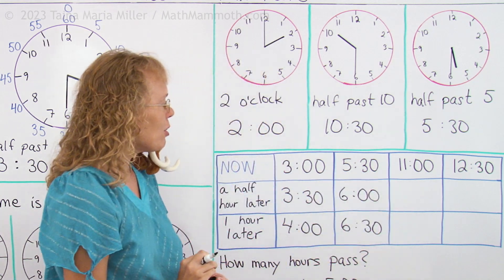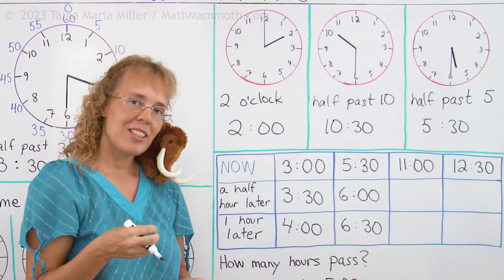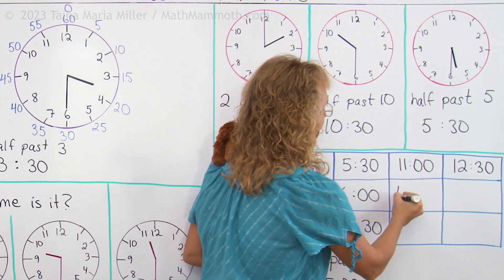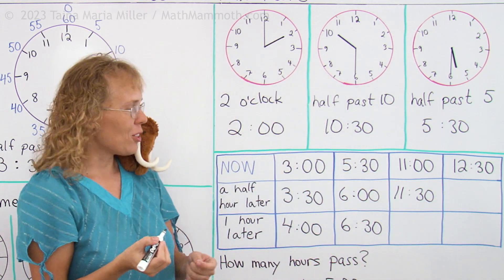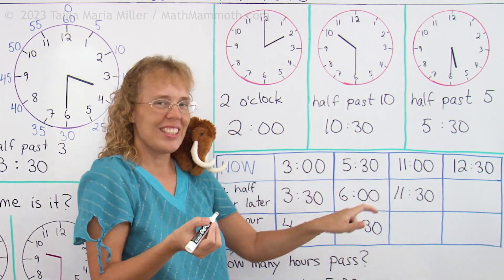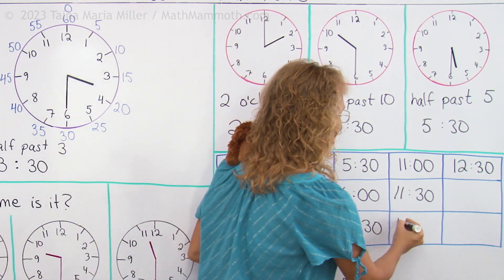If it is 11 now, then what time will it be half an hour later? Can you tell? 11:30. And then half an hour later yet, or an hour later than 11. That's easy. An hour later than 11 is 12.